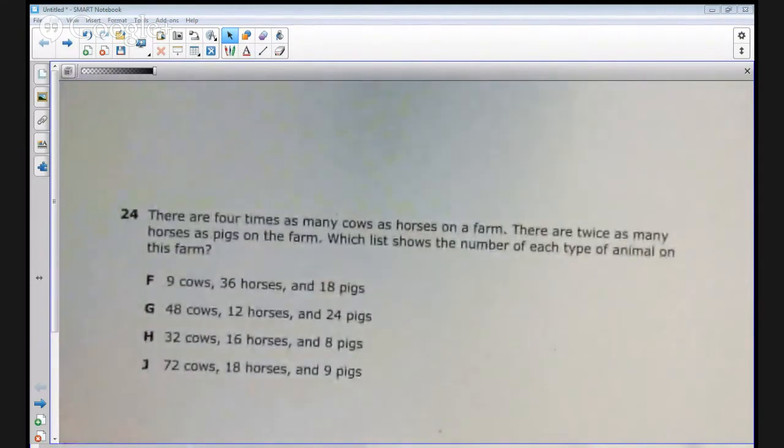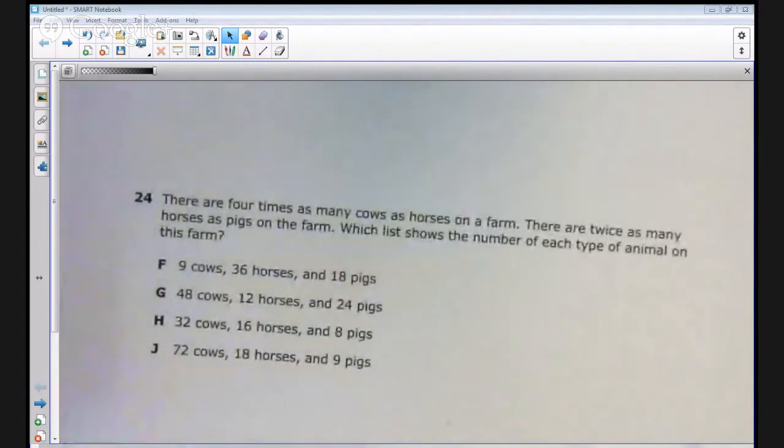Now this item was a hard item for the students in Texas that took this test. 47% of the students got this item correct. That means that 53% missed the item. The most common answer choice was the correct answer, which was answer choice J.